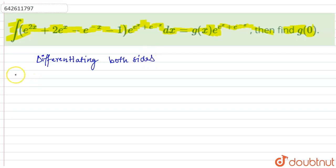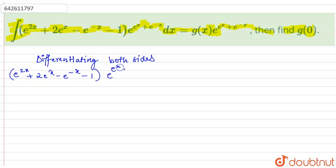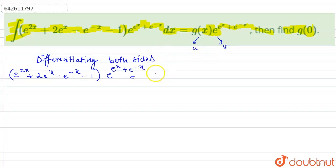After differentiating, the left-hand side becomes (e^(2x) + 2e^x - e^(-x) - 1) times e^(e^x + e^(-x)). On the right-hand side, we have a product of two terms, so we are going to use the product rule.